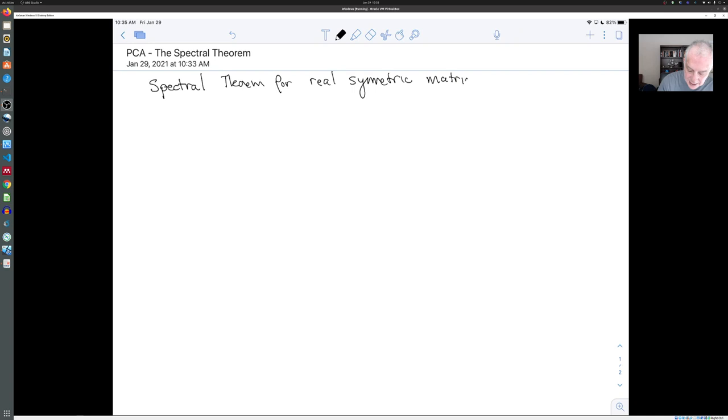This is called the Spectral Theorem for real symmetric matrices. It says that we know the following: suppose that D is a real-valued, real by real meaning real entries, k by k symmetric matrix.